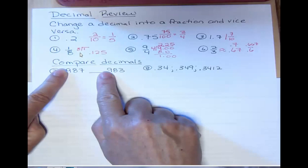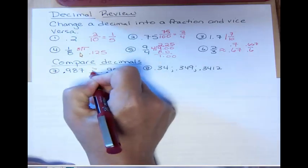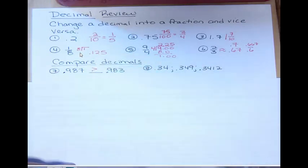Think about, somebody's going to give you money. Which amount do you want? You want the 987. So 987 is greater than 983. The fact that there's a decimal there doesn't really matter.